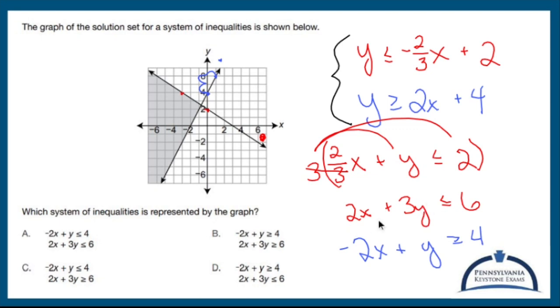So 2x plus 3y is less than 6. That looks like it's that one. Negative 2x plus y is greater than, oh, greater than, no, I need greater than 4. So negative 2x plus y is greater than 4. It looks like it's going to be you.